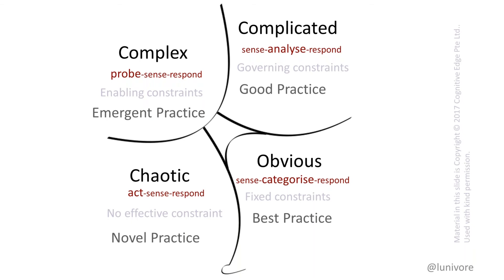In chaos there are no effective constraints, but it's also the domain of novel practice — really innovative ideas when you have nothing to lose. In the middle is Disorder, where we don't know which domain applies. I once failed to read the instructions on a complicated photographic green screen, thought it was safe to fail, and it smacked me in the eye. But far more common is treating complex things as if they can be made predictable — that was waterfall's mistake.